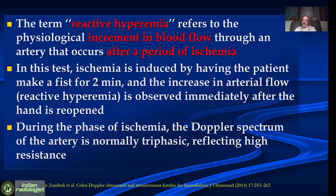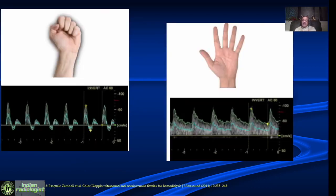There is also a test known as reactive hyperemia, done typically before fistula creation. We look for an increment in blood flow after a fist clenching exercise. This test tells us whether the artery is able to dilate adequately after ischemia — and once a fistula is done, there is increased demand, and the artery should be able to cope with that increased demand. We ask the patient to hold the fist tight, evaluate the radial artery — typically a very high resistance waveform — then ask the patient to release the fist, and after releasing, we see an increase in diastolic flow, telling us the artery is good for dialysis.